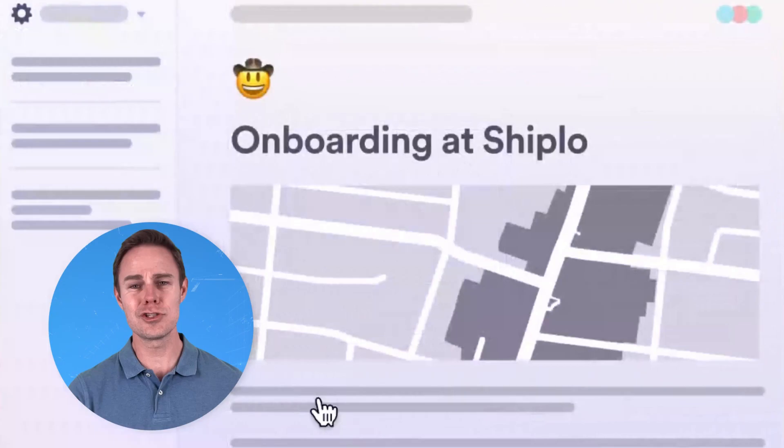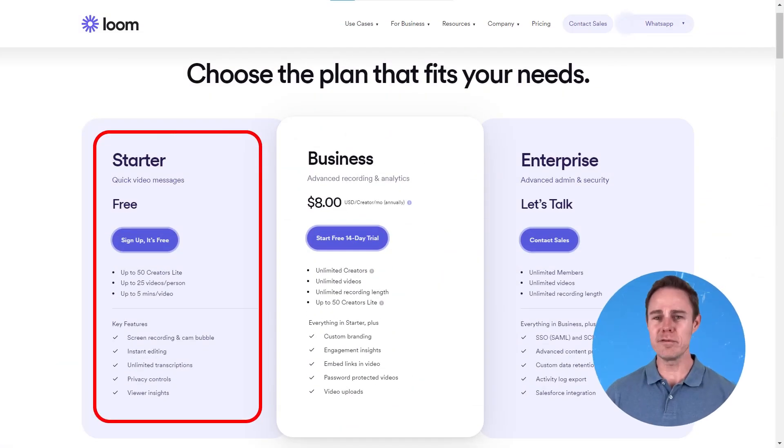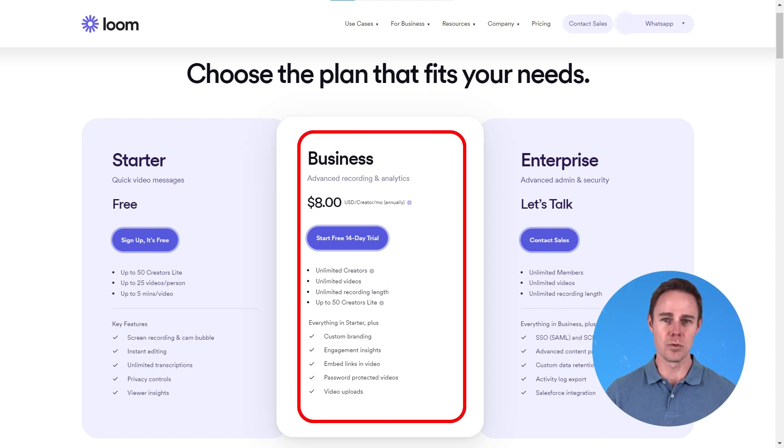Loom is a useful tool for business owners, employees, and students. Now, Loom has a free version, but that only allows you to create 50 videos, each up to five minutes in length. If you want something that packs more of a punch, we'd recommend the Business package, which costs just $8 a month. Believe us when we say you'll get your money's worth. The video you're watching is proof.